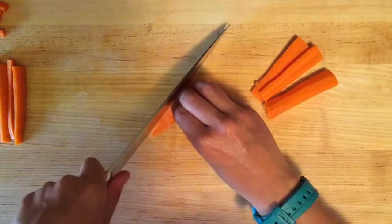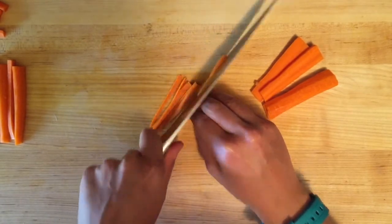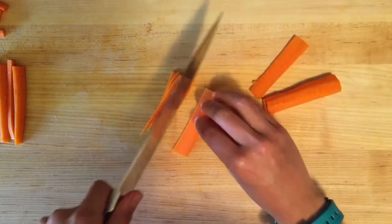If you want to sound really fancy to people, you can throw around the term julienne, which is what we're doing right now. Cutting the slice into very, very fine pieces.